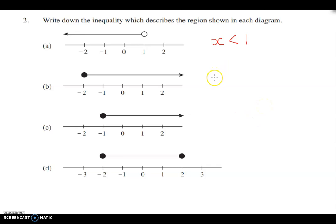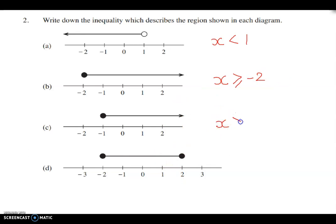For part B, the arrow goes towards the right side, so I write x is greater than. The circle is on top of negative 2, and the circle is shaded — a solid circle — therefore I use the equal sign: x is greater than or equal to negative 2. For part C, the arrow also goes to the right, with a shaded circle on negative 1, so x is greater than or equal to negative 1.